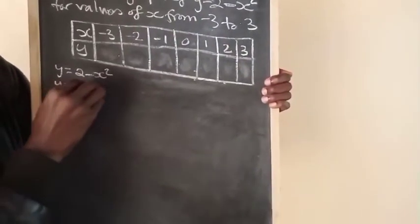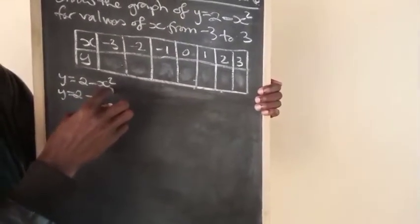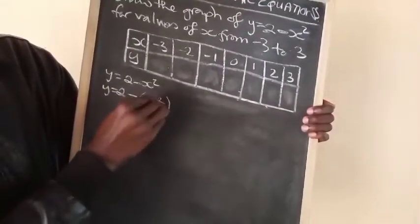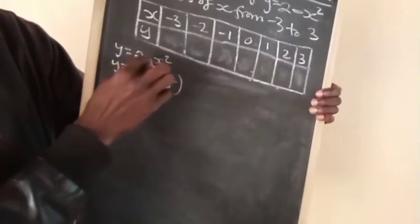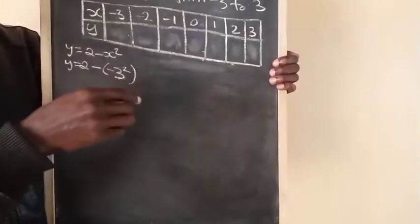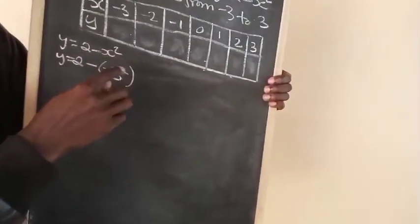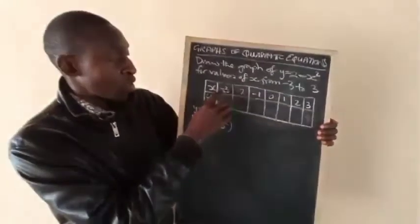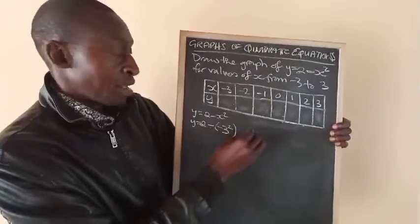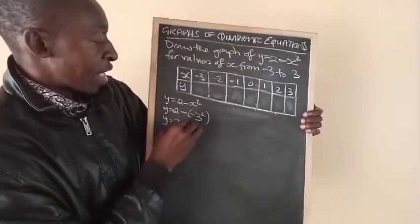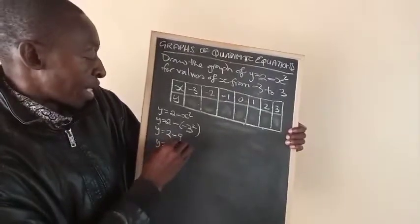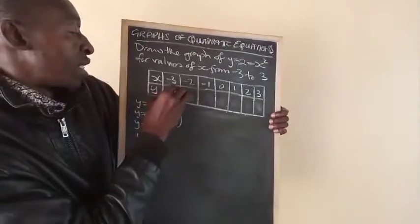Then y equals 2 minus, when x is in the bracket. Let's start with x equals minus 3. We square x first, then subtract from 2. So we have 2 minus minus 3 squared, which equals 2 minus 9. Therefore y equals minus 7.